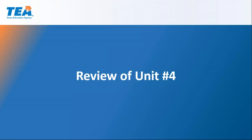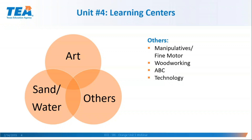Let's begin by reviewing unit four briefly. We covered really two learning centers last time — the art center and the sand and water center — and then we briefly talked about some other centers that can be used in a pre-kindergarten classroom. We just ran out of time covering all of these, but we did have a little bit of time to talk about a manipulatives or fine motor center, a woodworking center, an ABC center, and a technology center.